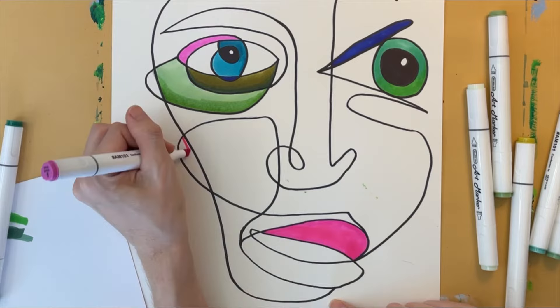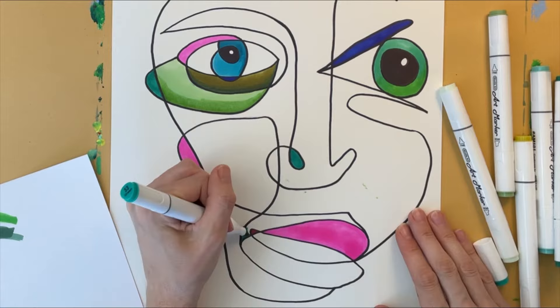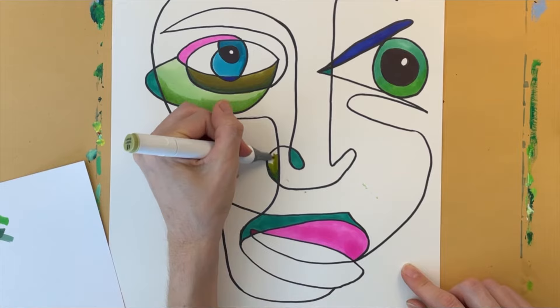Because we're working on thick multimedia paper, it soaks up a lot of the marker ink and causes the markers to dry out quickly. This is why I only use the markers on the tiny areas.